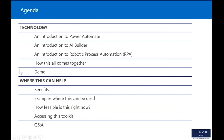The agenda: we'll touch on the technology — what is Power Automate, what is AI Builder, what is robotic process automation, and how do those things come together. Then we'll play a 10-minute demo video. Towards the end we'll talk about the benefits of a toolkit like this, give some real-world examples of where it can be used, and then discuss the feasibility of this tool set.